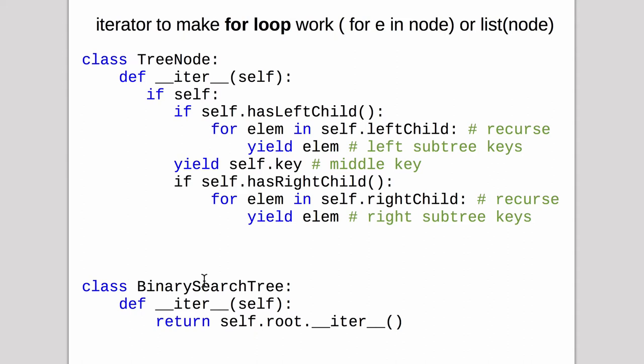So when you call iterator on binary tree it ends up doing this and going over the entire tree and returning the nodes in order. And then you can use that in a for loop or make a list or something that expects an iterator.